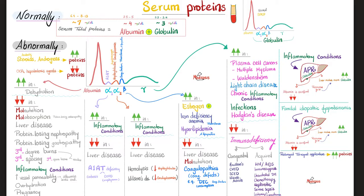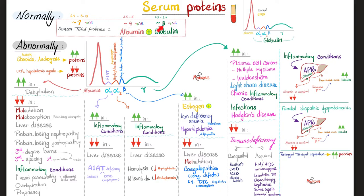Now to the most important slide: serum proteins. Normal albumin is around 4 mg/dL; normal globulin is about 3. This relates to my rule of fours: normal sodium 140, normal chloride 104, normal arterial CO2 40, normal bicarbonate 24, normal pH 7.4, normal PT 14, normal potassium 4, normal albumin 4, normal phosphate 4, normal TSH 0.4 to 4. Four plus three equals 7 — that's your serum total proteins. Here is the normal serum protein electrophoresis.